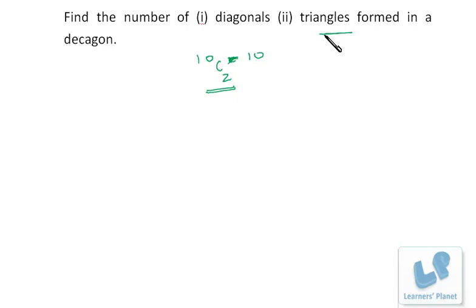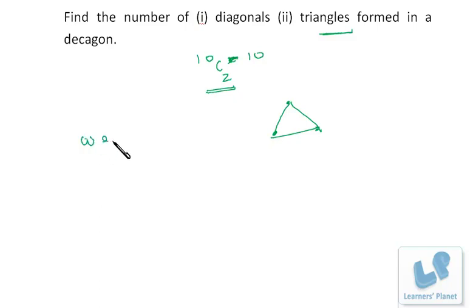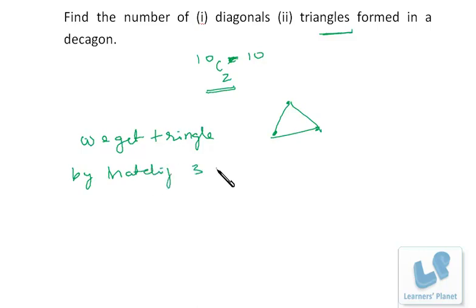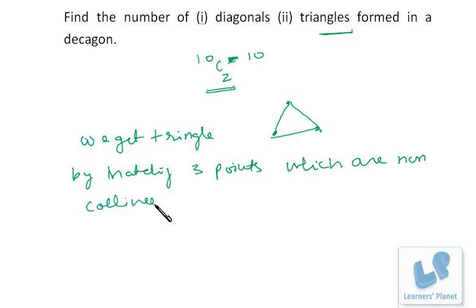Now the new concept: triangles. We get a triangle by matching three points, but the condition is that the three points must be non-collinear. If we match three collinear points, we get a line, not a triangle. So triangles are formed only by matching three non-collinear points.